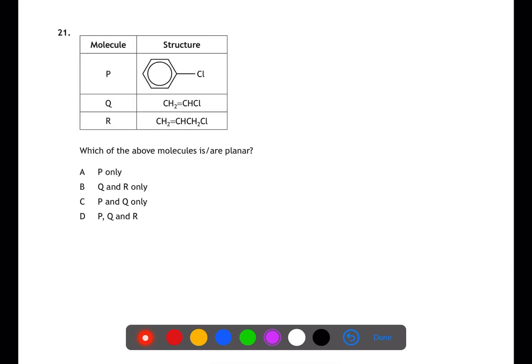For question 21, we need to understand bond angles and the role that different hybridisation has to play in this. Where we have sp hybridisation, we have 180 degree bond angles. Where we have sp2, we have 120 degree bond angles. And where we have sp3, we have 109.5. Therefore, if we have sp and sp2 hybridisation, then we will have planar structures.